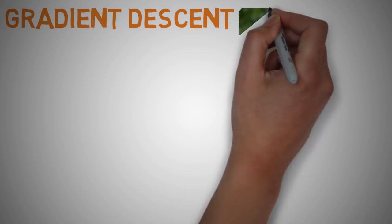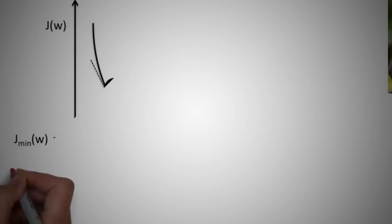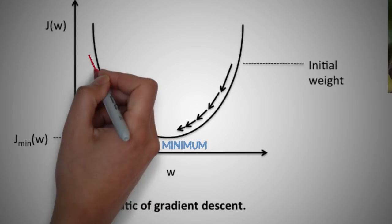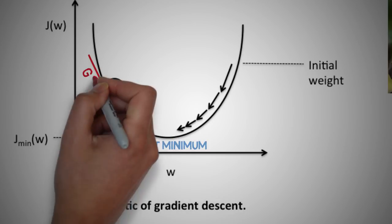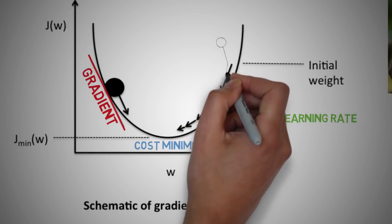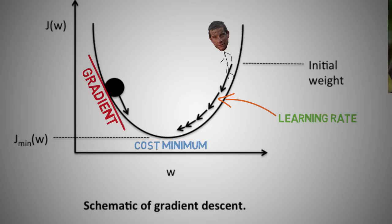Enter gradient descent. Essentially, we can picture gradient descent optimization as a hiker. Let's call him Bear Grylls, the weight coefficient. We want to climb down the mountain of the cost function into the valley, which is our cost minimum, and each step is determined by the steepness of the slope, the gradient, and the step distance of Bear Grylls, which is our learning rate. Considering a cost function with only a single weight coefficient, we can illustrate this concept like this.